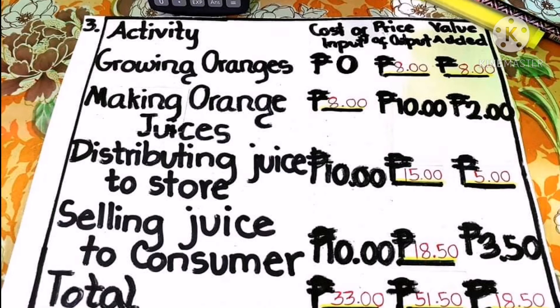For number 3, we need to fill the missing values in the table, which has columns for cost of input, price of output, and value added. For growing oranges, both blank values are 8 pesos, because 8 − 8 = 0 and 8 + 0 = 8. Squeezing oranges into juice: 10 − 8 = 2. Distributing juice to store: price of output is 15 pesos and value added is 5 pesos, because 10 + 5 = 15 and 15 − 10 = 5. For selling juice to consumer: price of output is 18.50, because 10 + 3.50 = 18.50, and 18.50 − 10 = 3.50.